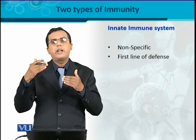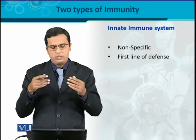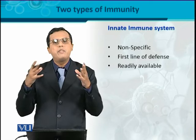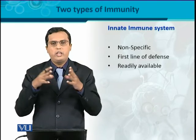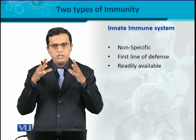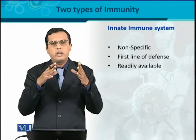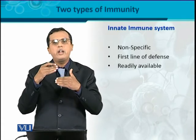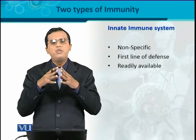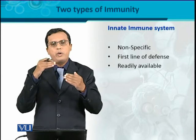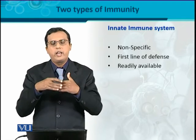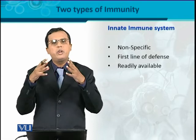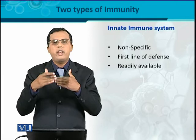The infection has to breach and bypass this first line of defense every time. The innate immune system is readily available, meaning it is present at all times without needing to be activated. Just like a security guard at the main entrance of the university — they are always there, always vigilant. There is no need to train or prepare them specifically. They are always available.